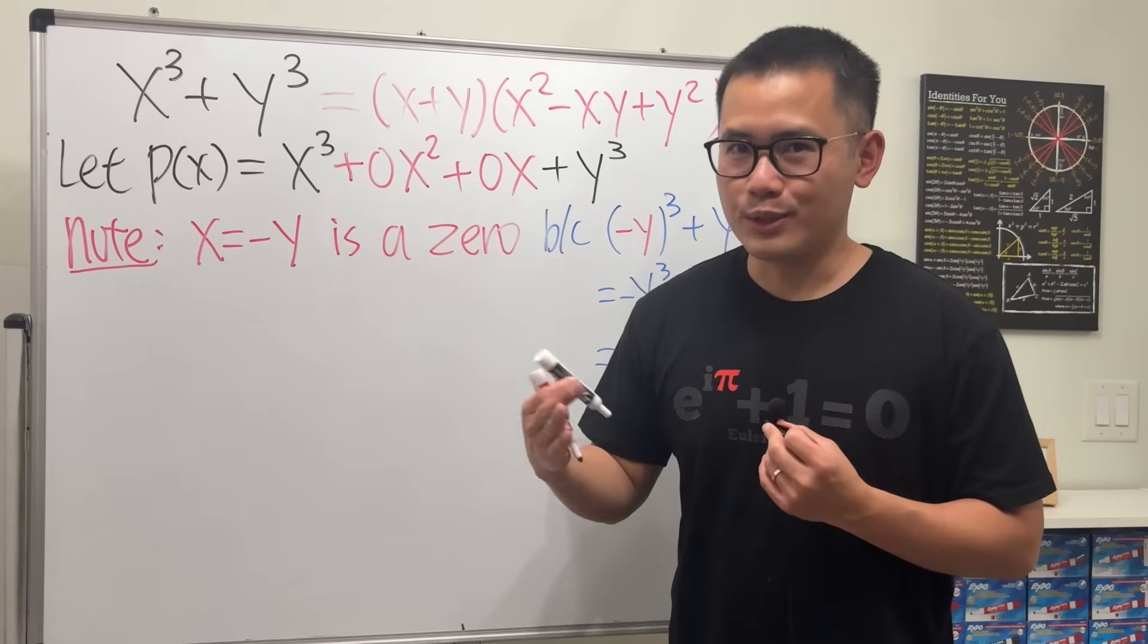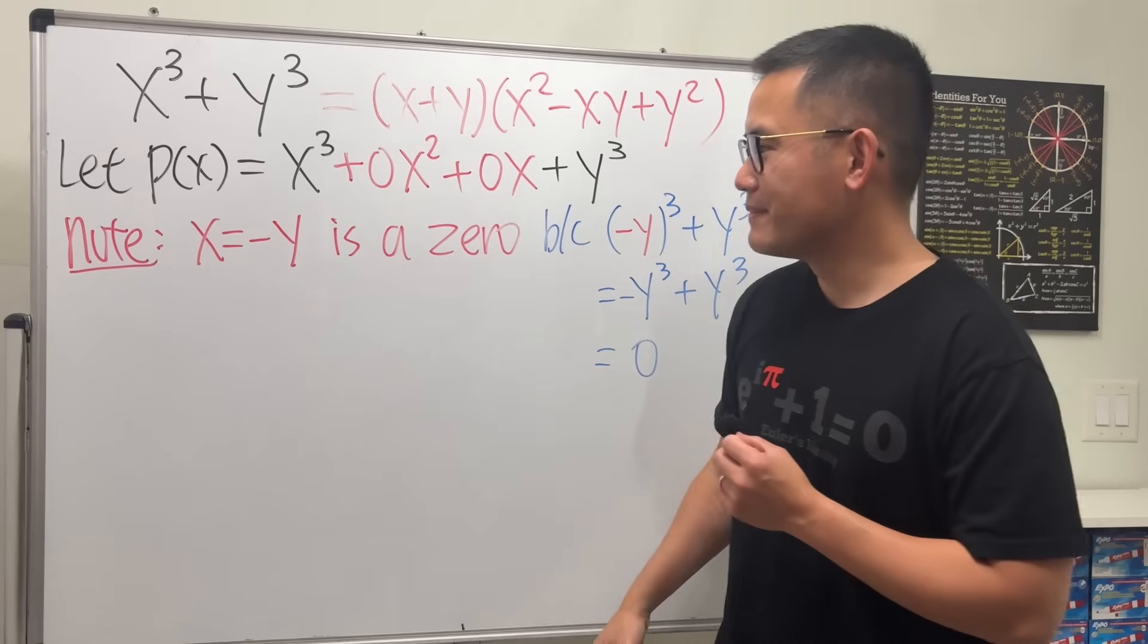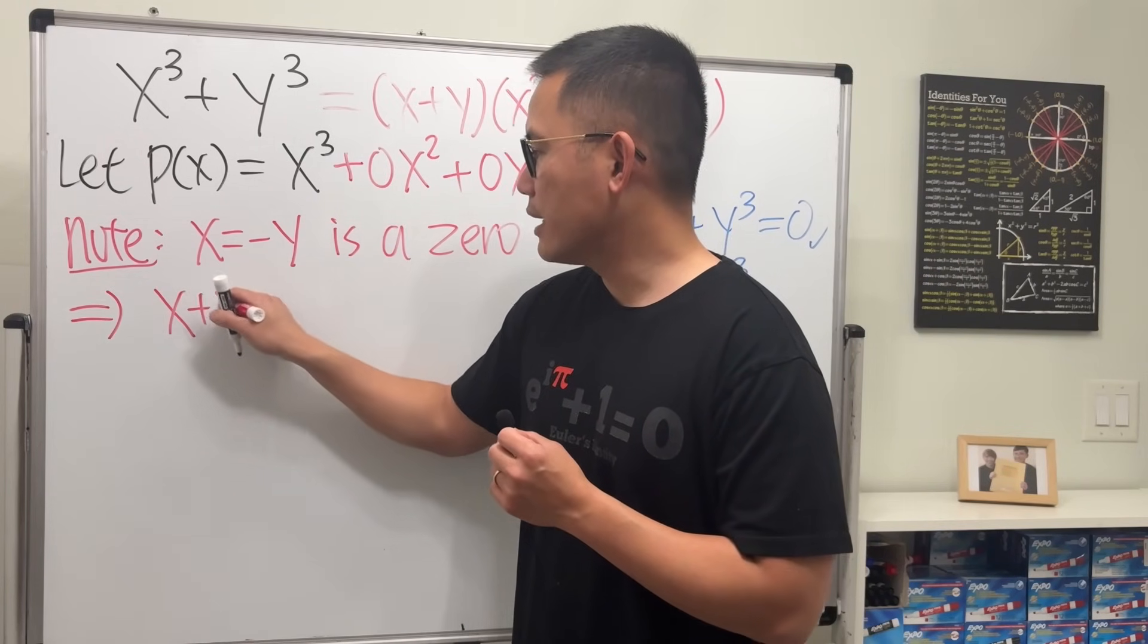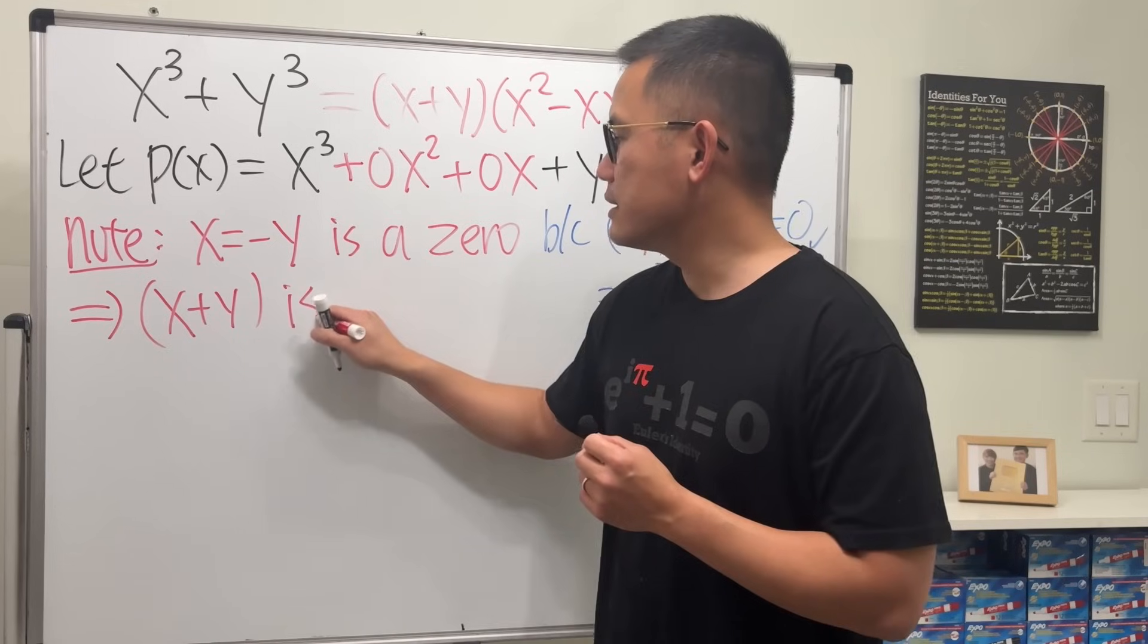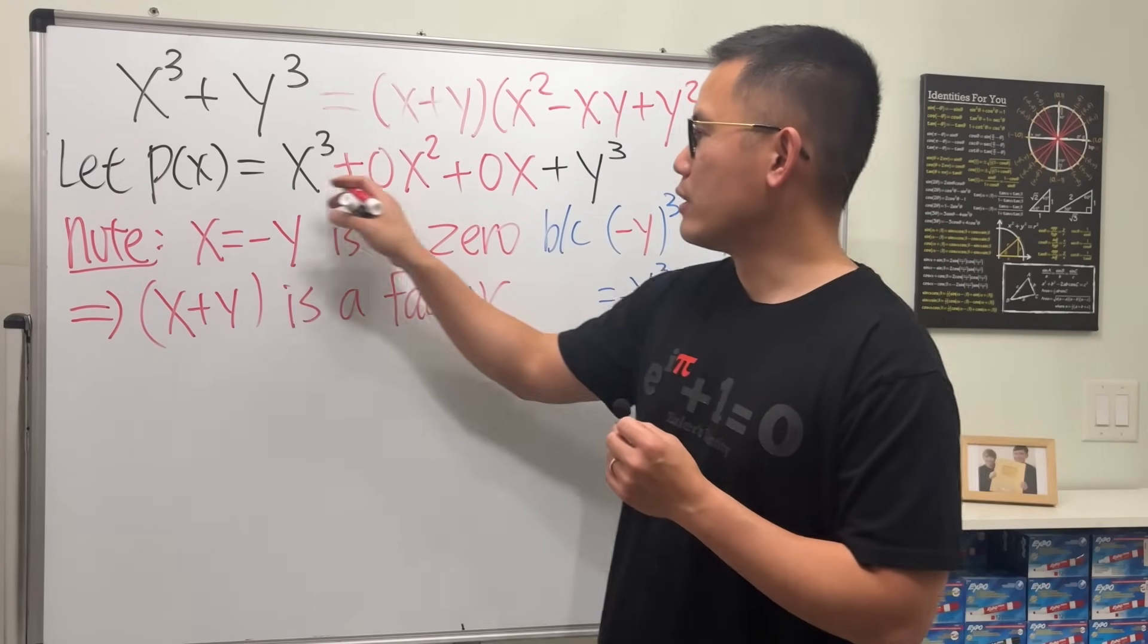So this is the traditional steps of doing the rational theorem, right? From here, we can say add y to both sides. That means x plus y is a factor of our polynomial.